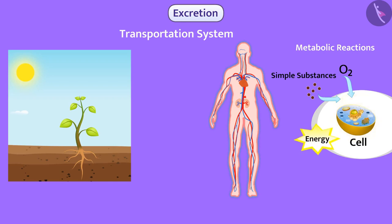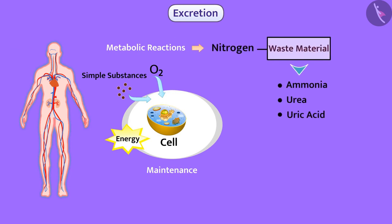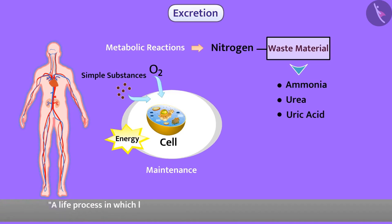These metabolic reactions help in energy generation and maintenance activities in the cell. During these metabolic activities, nitrogen-containing waste material gets generated. Such substances are harmful to the body, therefore it is necessary to remove them. The process of excretion helps for this purpose — a life process in which harmful metabolic waste gets removed from the body is called excretion.